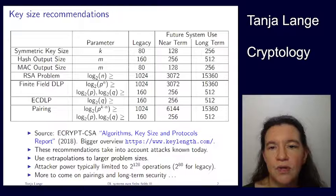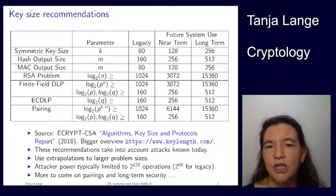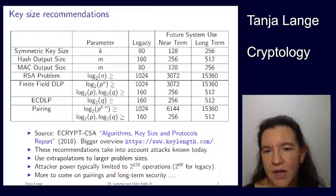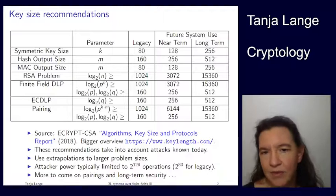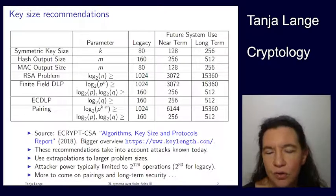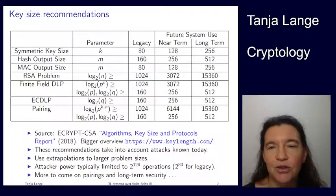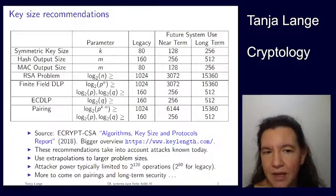For RSA, I've shown you the number field sieve as a sub-exponential algorithm. So if you take 3000-bit keys and up — PGP allows you to go up to 4000 bits — this is a good size for the near term.